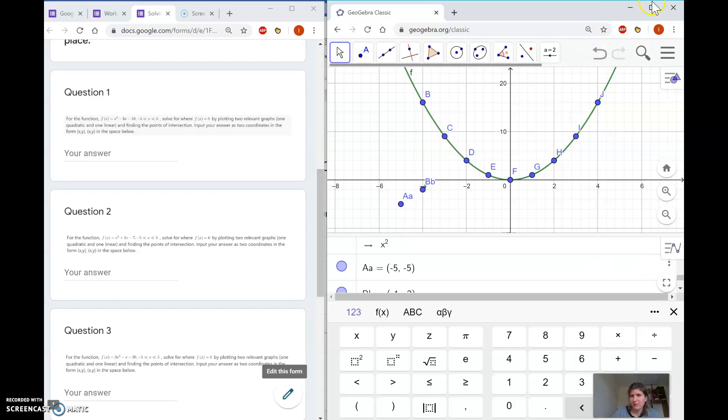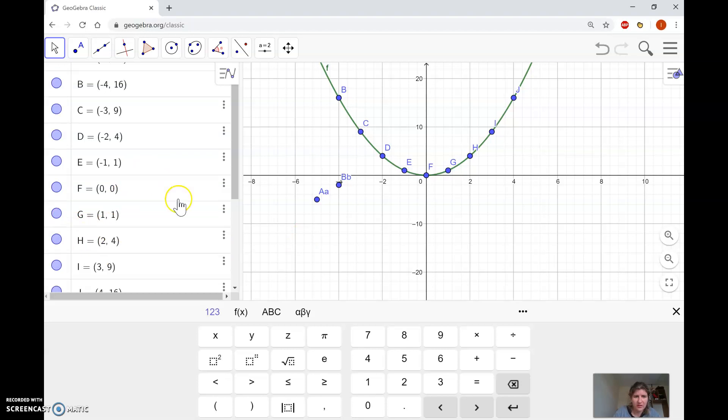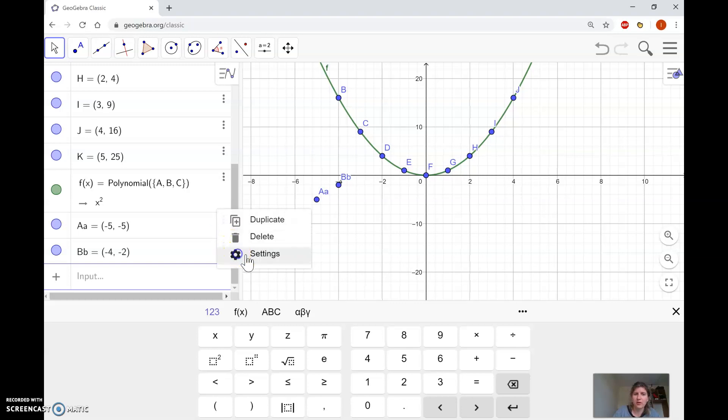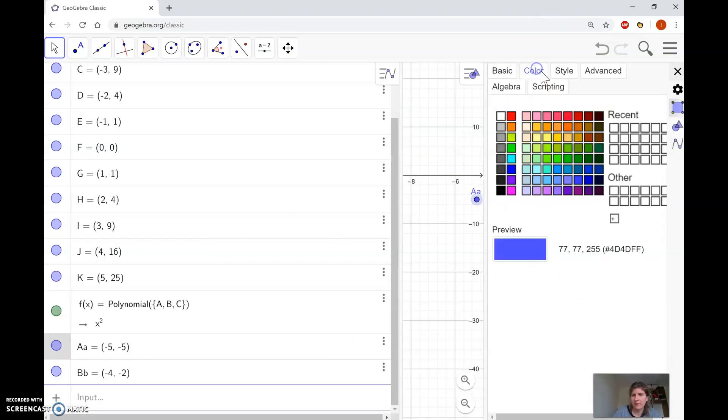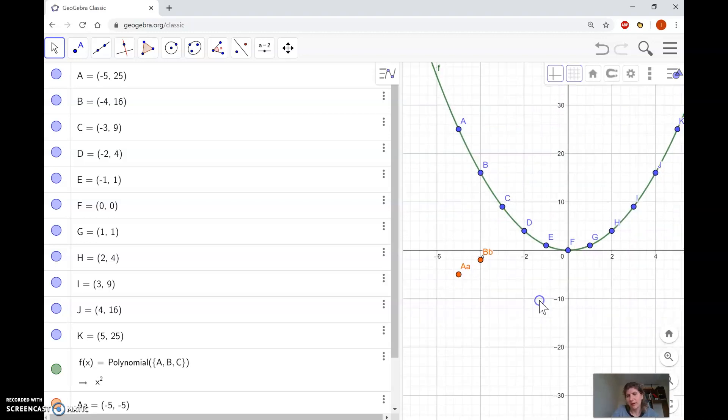If you want, you can change the color of these points so they're different from the quadratic ones. Go to settings and select the color. I'm going to make them orange so they're clearly different. I'll make all the linear points orange. Now I'm going to pause and plot the remaining points, then we'll come back and find the solutions.